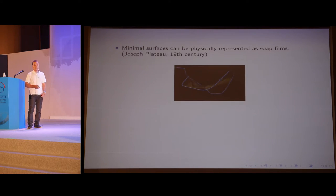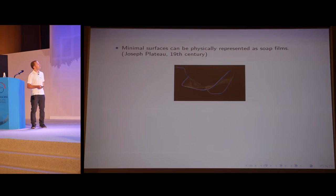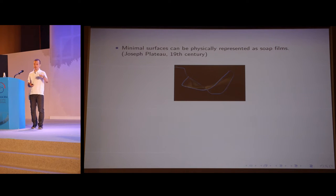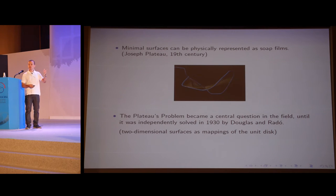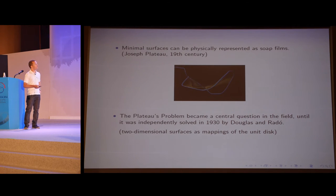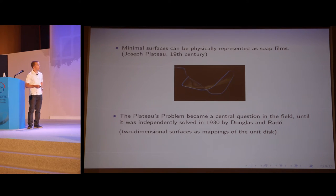These objects can also be modeled by soap films. Because Joseph Plateau was the physicist who, in the 19th century, performed several experiments with such films, the question raised by Lagrange became known as the Plateau problem. This became a central question in the field until it was solved in 1930, independently by Douglas and Radeau.